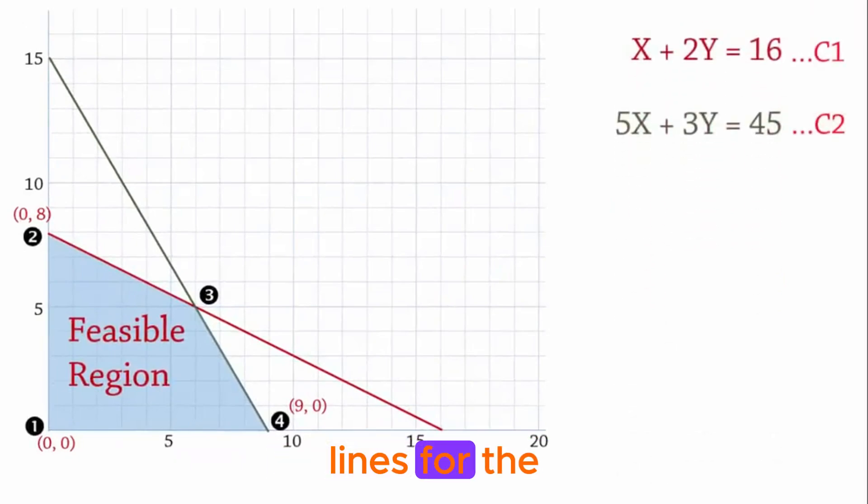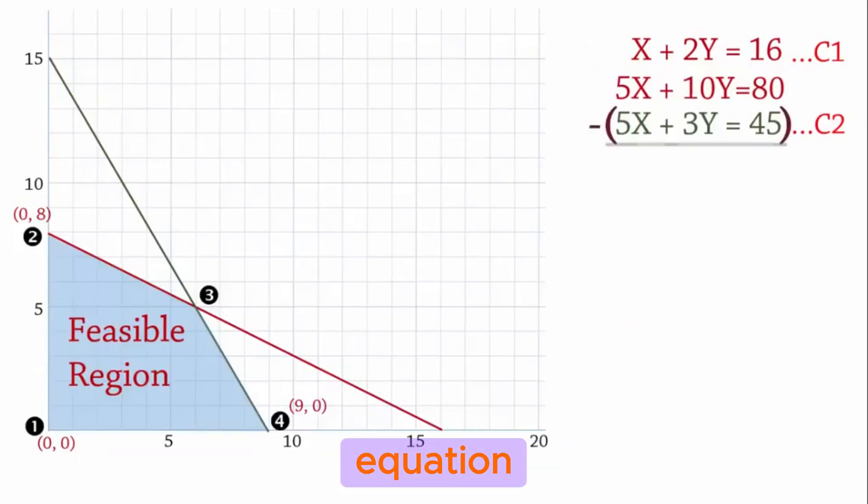Here are the lines for the two constraints. Suppose I choose to eliminate X. Note that the coefficient of X here in C2 is 5. Then I can simply multiply the first equation by 5 to give 5X plus 10Y equals 80. And then we can subtract C2 from the new equation. So 5X cancels 5X, 10Y minus 3Y is 7Y, and 80 minus 45 gives 35. And on dividing both sides by 7, we have Y equals 5.